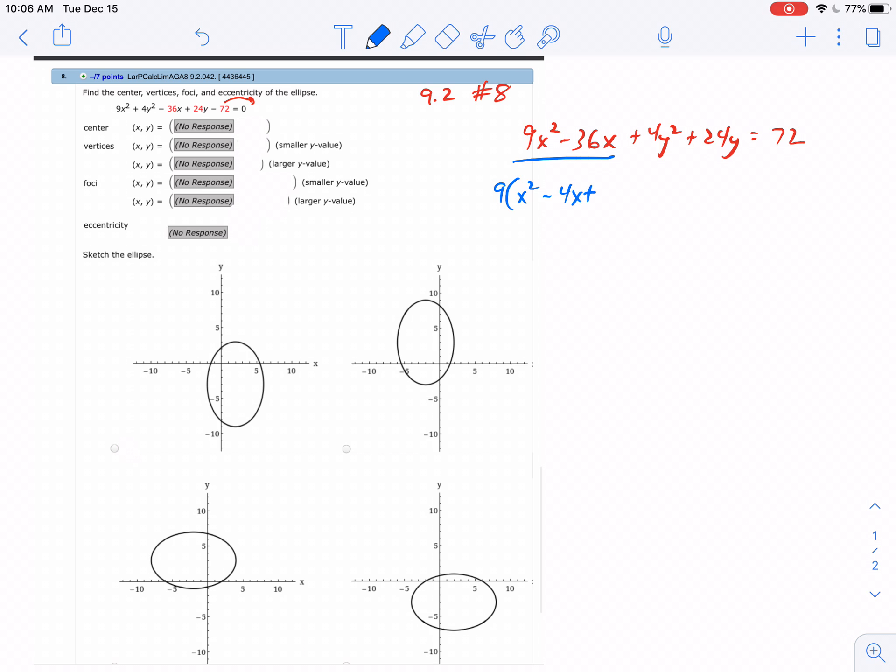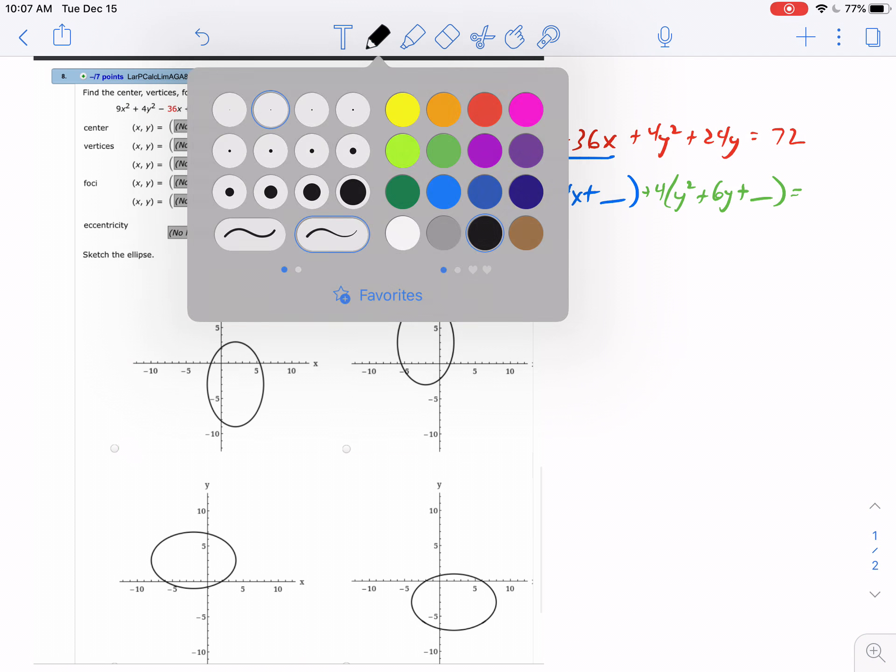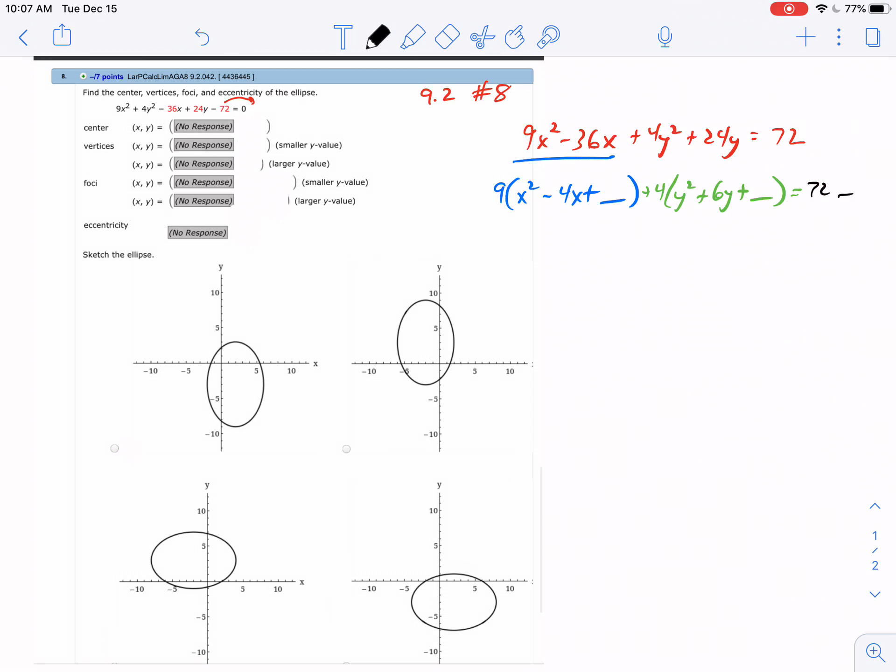Then I'll factor the 4 out, so that's y squared plus—24 divided by 4 is 6y—plus some new number there. Then we'll have 72 and a couple new numbers going in over there.